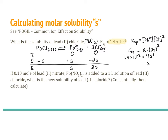Dividing both sides by 4, we get S³ equals 4 times 10 to the negative 9th. Taking the cubed root of both sides gives the molar solubility: 0.0015 moles per liter. That is the molar solubility of lead chloride when no common ions are dissolved in the solution — no lead or chloride already dissolved in the water before the lead chloride is added.